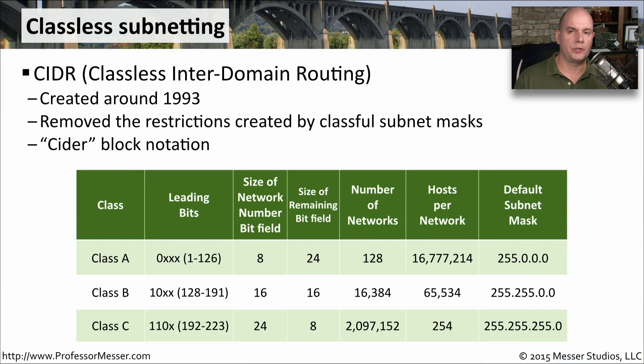Classless inter-domain routing was created in 1993 to help address some of the shortcomings we had with the class-based subnet masking.